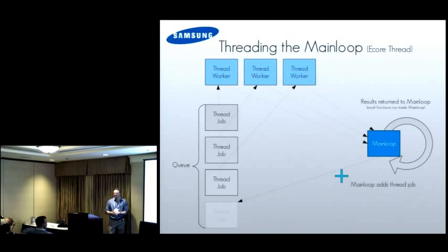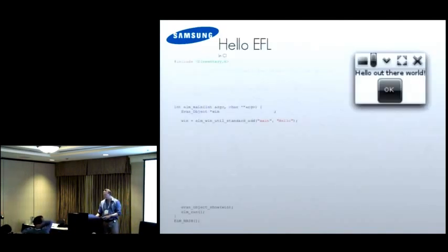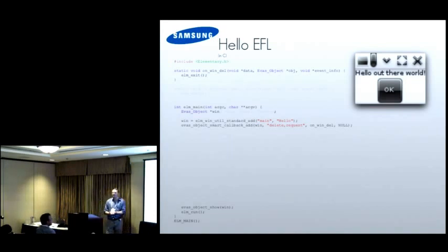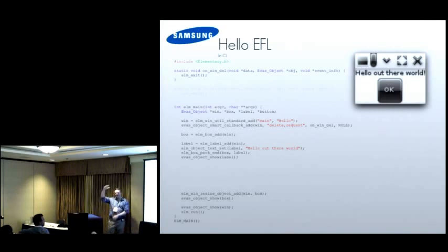With threading, the thread jobs can be queued up. This is done automatically for you when you create an ecore thread - they just get shoveled off to thread workers that deal with it as they become available, and your main loop gets told what has happened. Writing applications or code for EFL is pretty easy. Here is a fairly minimal program that creates a window. If we add a bit of code, we handle when an application is asked to exit - either the window is being deleted - and at this point Elm exit exits the main loop. Therefore the application exits as nothing happens after Elm run.